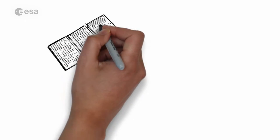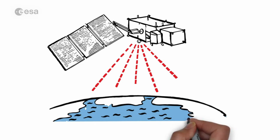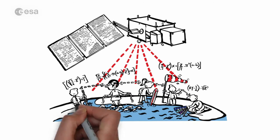Sentinel-3 will, for the first time, provide almost daily coverage of all surface water on a global scale, with information about its levels, movement, temperature, the wind speeds, and the water colour.